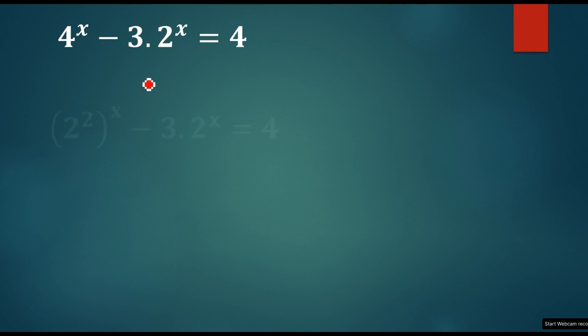Just write 4^x as 2^2 and whole power x. Now, this can be rewritten as 2^x into whole square. So, that's almost like, right? So, 2^m whole power n is equal to 2^mn. That can be straight, okay? So, it can be rewritten 2^x and whole square.